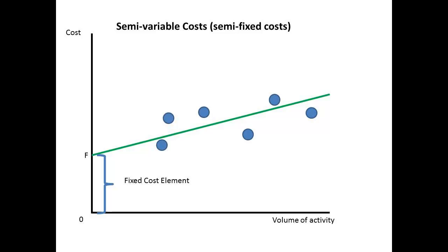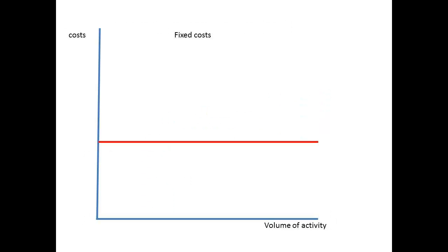By plotting a graph of volume of sales against cost, we find the best fit line will meet the vertical axis at a point F. The distance OF represents the fixed cost element. That is fine, but let us return once more to our horizontal line for fixed costs, which we have shown here.